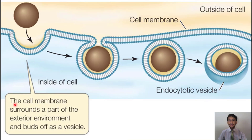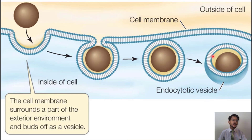The cell membrane interacts with outside materials and brings those materials inside by forming an in-folding in the form of a bud, which we called a sack. That sack or bud then separates from the cell membrane and becomes an endocytotic vesicle. So the particle that was outside the cell and trying to interact with the cell membrane has now entered the cell inside an endocytotic vesicle.